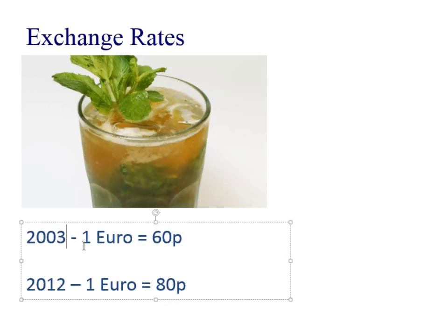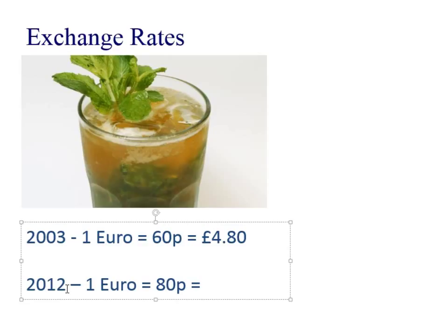Let me get my calculator — it's been a long day at work. The mojito was eight Euros, so that would be eight times 0.6, which equals £4.80 for one mojito. But in 2012, one Euro is worth about 80p. So even nine years on, if my auntie had kept the price the same at eight Euros, that would have meant the mojito cost £6.40.